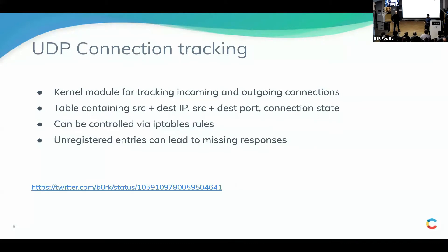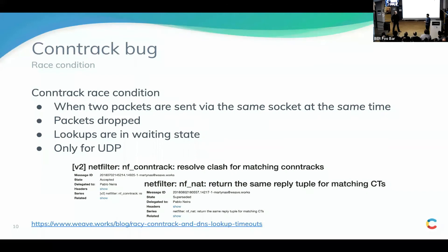To understand why this is a problem, we need to understand how UDP works in the Linux kernel. There's a Linux kernel module called conntrack — a table with source and destination IP and port that tracks connections going in and out of a node. Every time a connection goes missing from this table, you see high latencies and timeouts. This can cascade from a single HTTP request. If DNS is not resolved because it's missing from the conntrack table, you see timeouts. It turns out there's actually a race condition in conntrack: if a single UDP packet comes to the same socket at the same time, one can go missing — and if that missing one is your DNS lookup, you'll see latencies and timeouts.